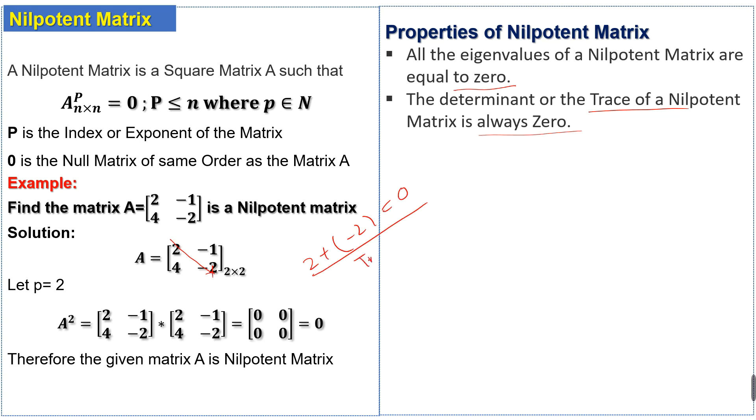So the trace of the given matrix is 0. And the determinant will also be equal to 0, minus 4 plus 4 equals 0. So determinant is also 0. The nilpotent matrix is a scalar matrix.